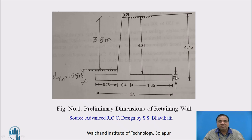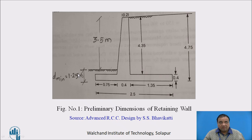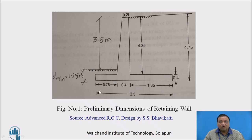The depth of the base slab will be h by 12, where h is the total depth. The minimum depth of foundation below ground level is given by SBC of soil divided by density of soil into k squared, where k is the coefficient of active earth pressure. The base slab width is assumed as 0.48 to 0.56 h.